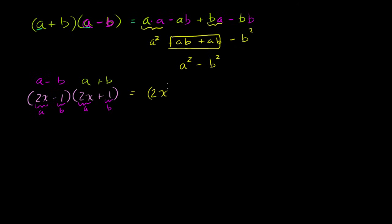So what is this going to be equal to? It's going to be a squared. It's going to be 2x squared minus b squared. Minus 1 squared. 2x squared is 4x squared. 1 squared is just 1. So minus 1. So it's going to be 4x squared minus 1.